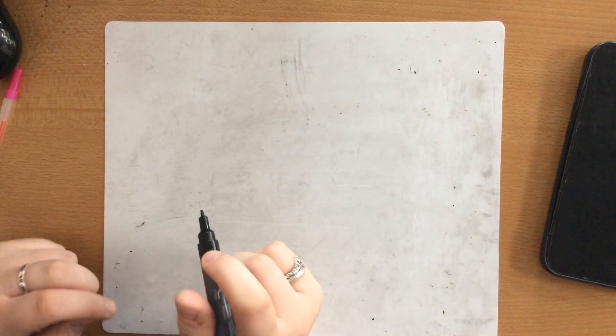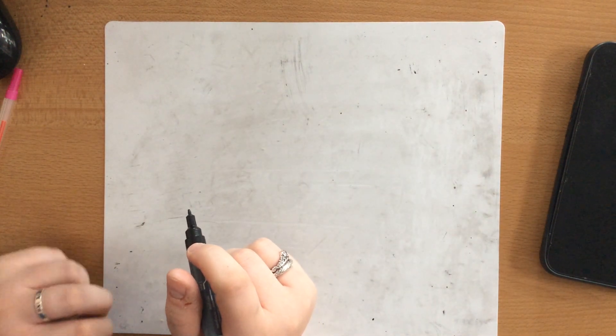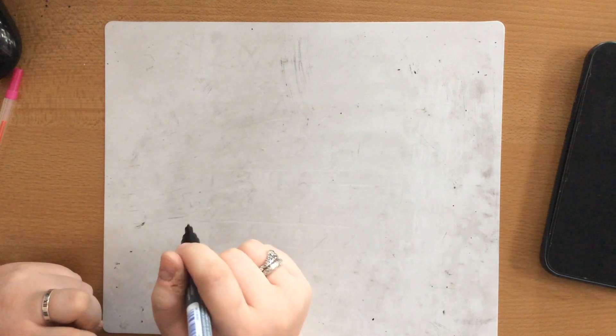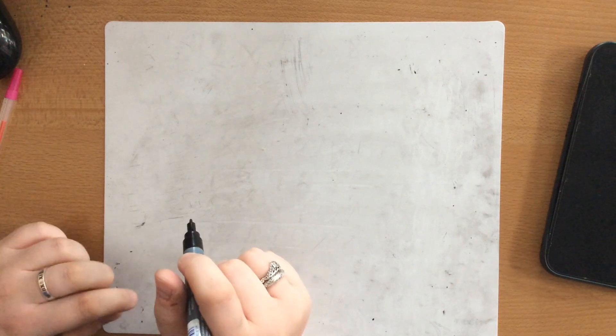Hi Year 5, just a quick video again to go over our bus stop method of division. So I'm going to first of all do a division where there isn't any remainders and then afterwards I'll do one where there is a remainder.